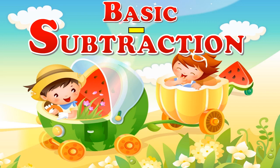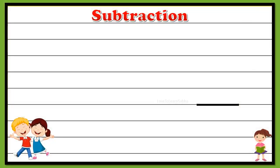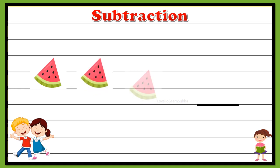Now let's understand the process of subtraction with this example. Let's check out what objects are available. Here we have one, two, three — so totally we have three pieces of watermelon. Since we have two kids, each one would have taken one piece each, so we have three minus two.